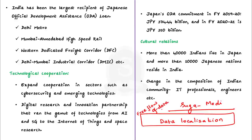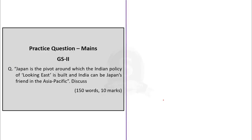On cultural relations, more than 40,000 Indians live in Japan and more than 10,000 Japanese nationals reside in India — a significant amount of people-to-people contact despite the geography. In recent years, the composition of the Indian community has changed with the arrival of a large number of professionals, including IT professionals, engineers, and management professionals. India is a very good contributor to the Japanese skill pool. This discussion has comprehensively covered India-Japan relations, which is very important from the mains examination point of view.